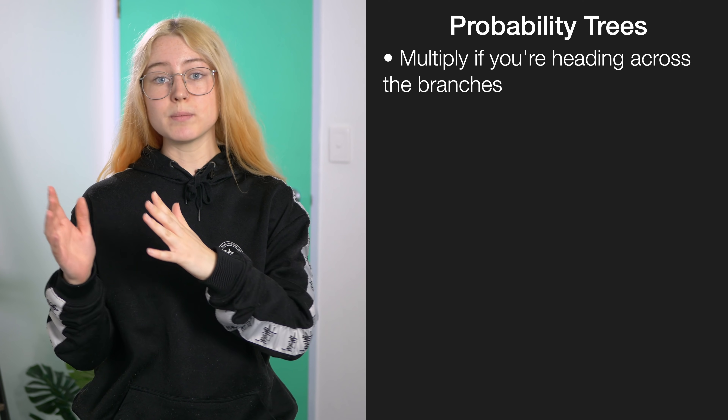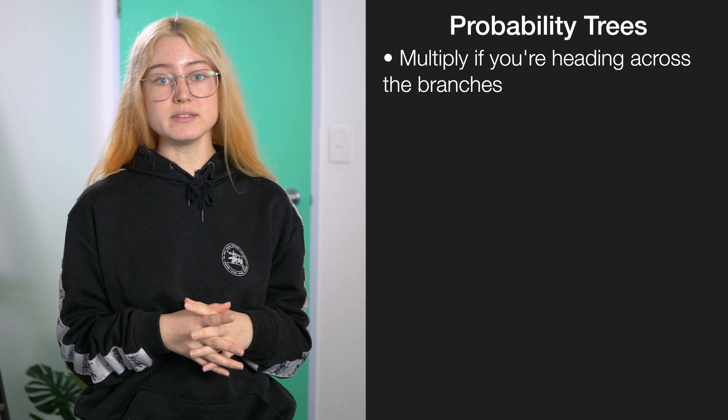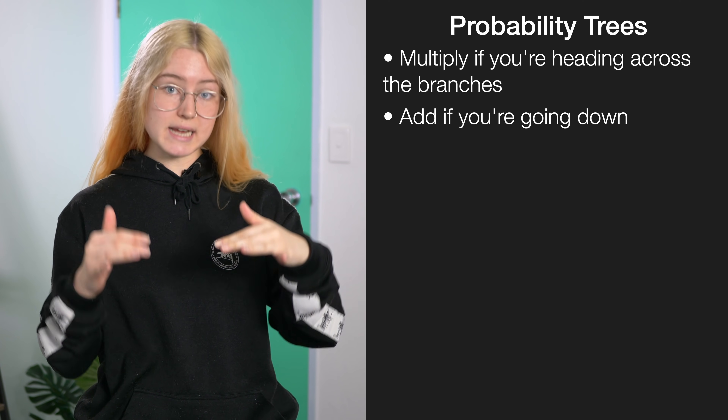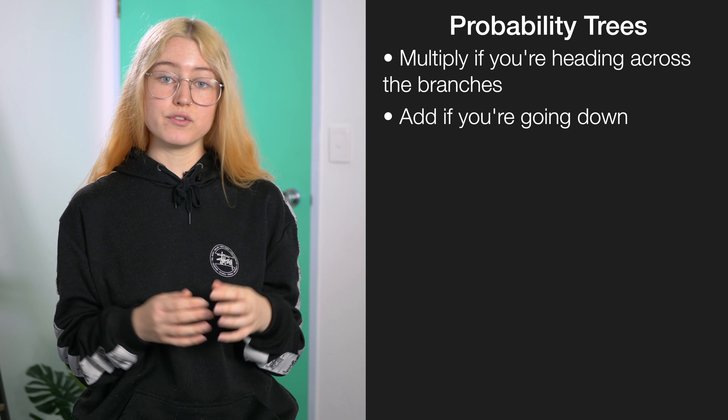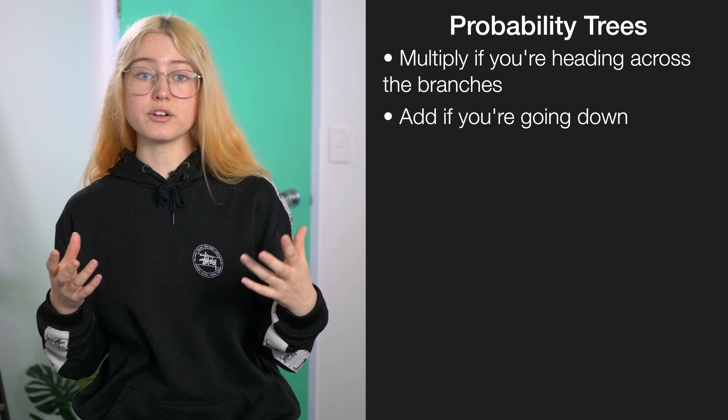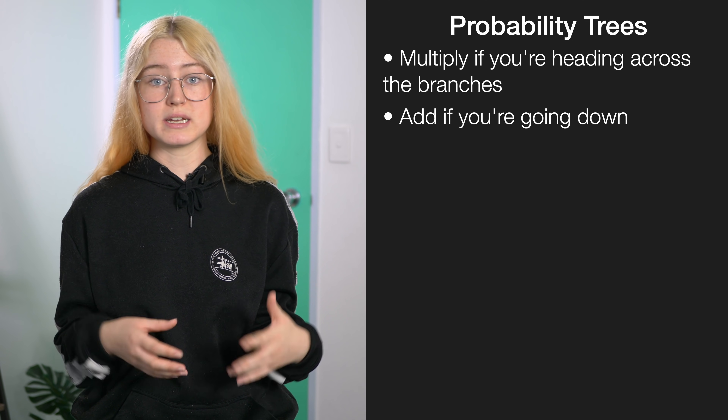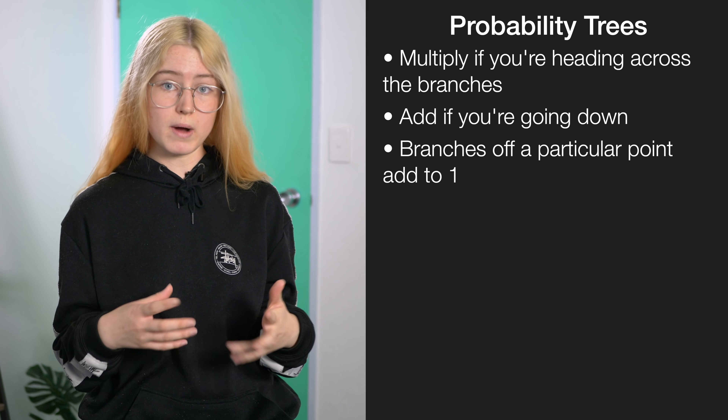In understanding probability trees there are three main rules to bear in mind: we multiply across our probability trees, we add down our branches, and for each singular event our probabilities must equal one.